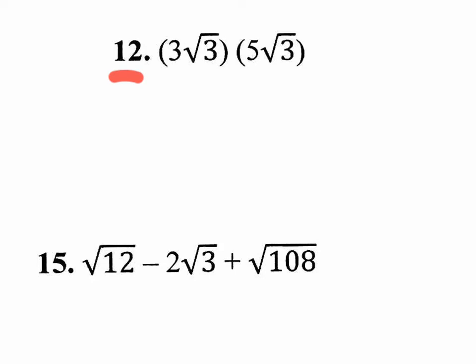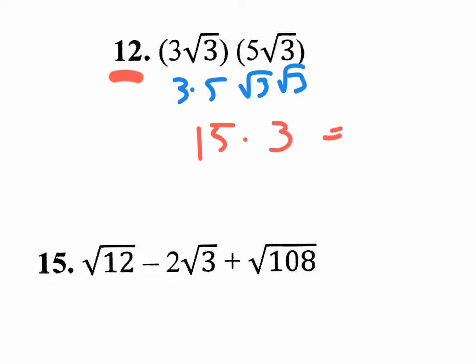Check out number 12 on the homework. We're going to rearrange things and multiply. I want to multiply the 3 times 5, and then multiply the square root of 3 times the square root of 3. So 3 times 5 is 15, and the square root of 3 times the square root of 3 is the square root of 9, which is really just 3. So I really have 15 times 3, which is 45.